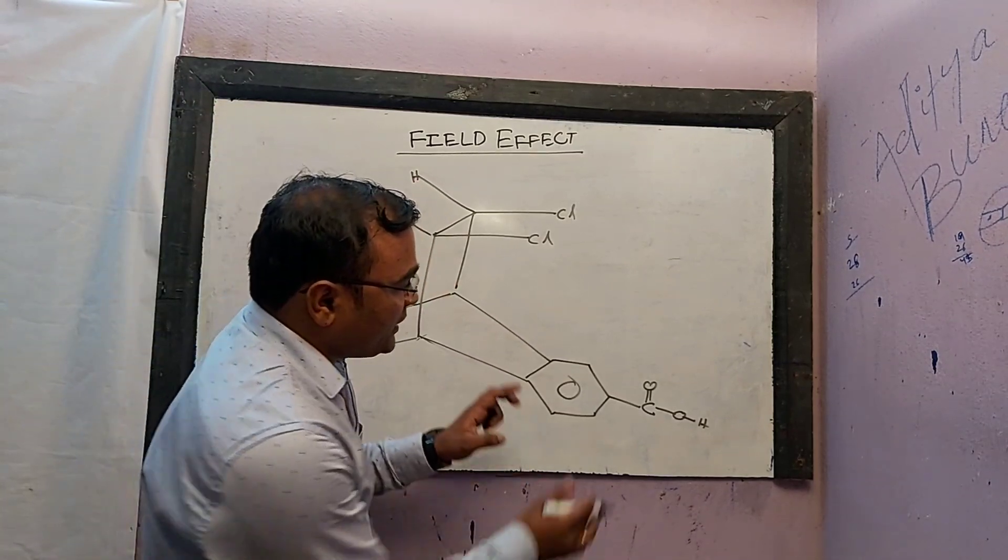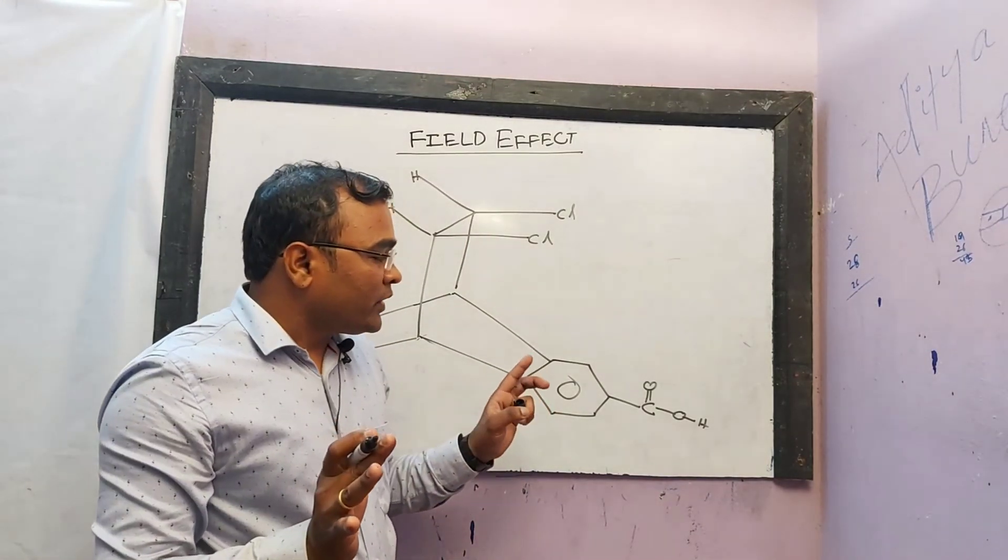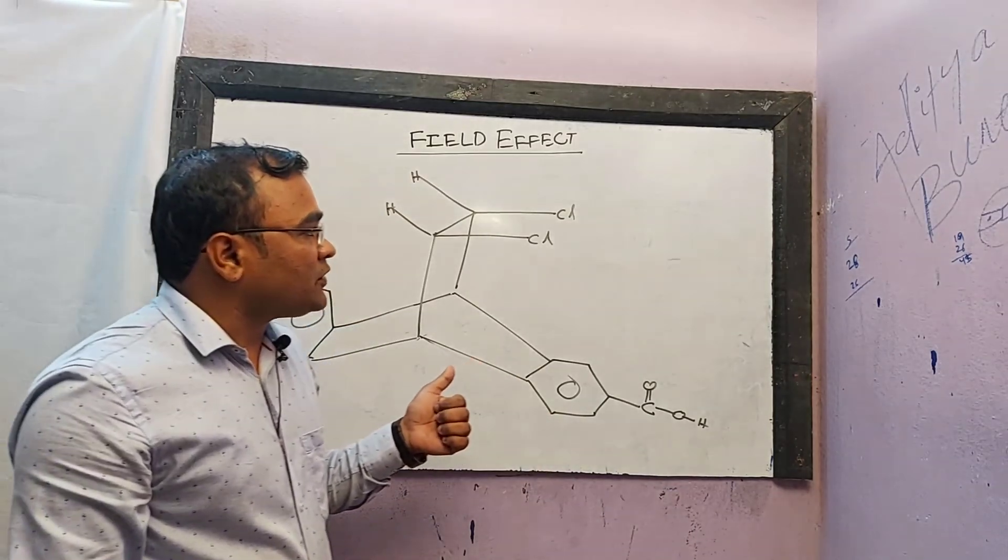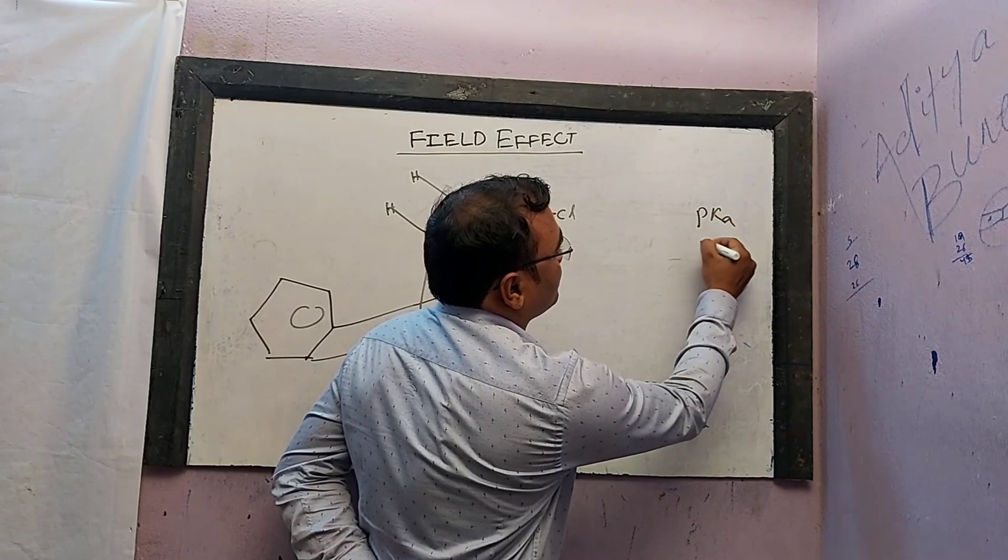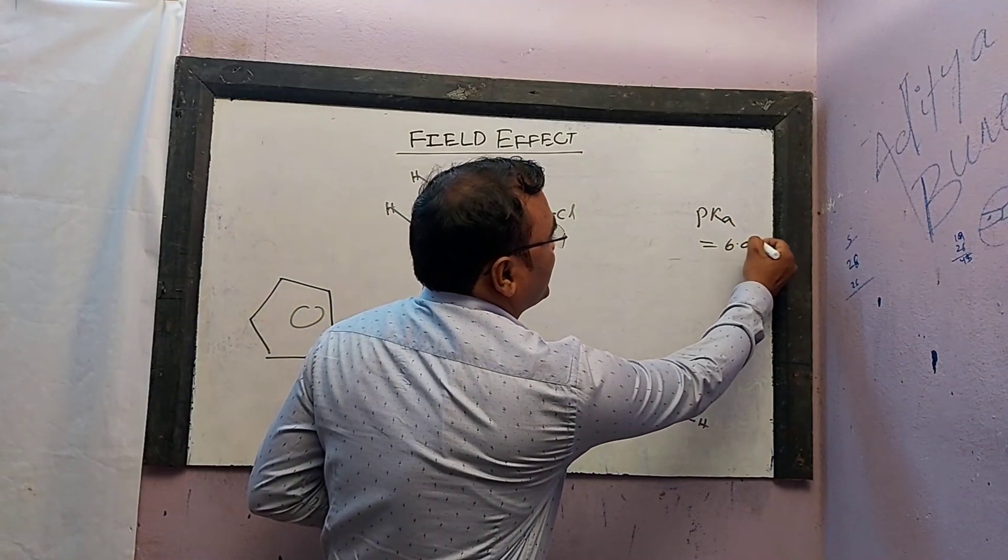From inductive effect concept, if an electron withdrawing group is present, then the carboxylic acid becomes more acidic. Its pKa value is 6.07.